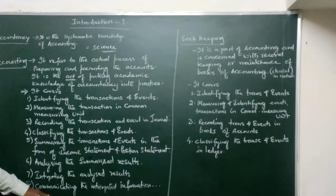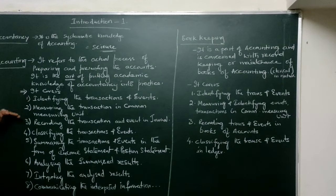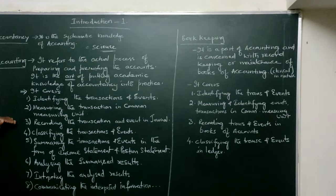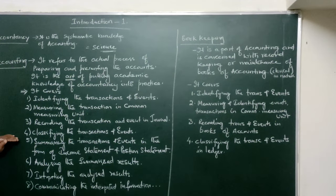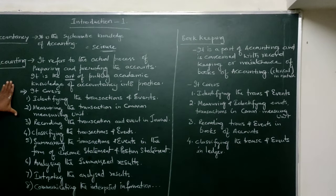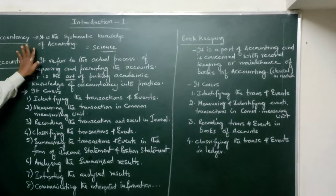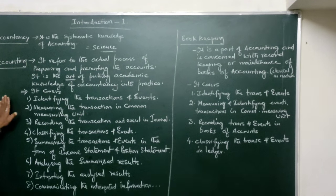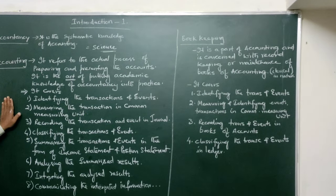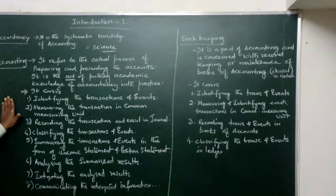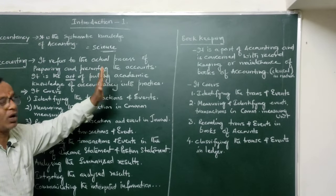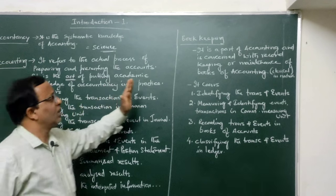All interested parties who have an interest in the accounting information must receive the communicated, interpreted information so they can take decisions relating to the business. So these are the different aspects in accounting. Accounting work is more technical in nature compared to bookkeeping. A person having well-versed knowledge of this science can do accounting work, which requires both science and art — applying science into actual practice.